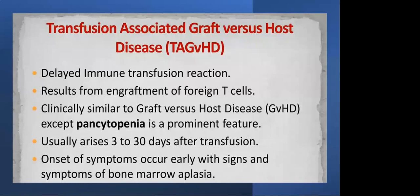The main goal of irradiation is to prevent transfusion-associated graft versus host disease (TA-GvHD). If non-irradiated blood is given, a delayed immune transfusion reaction can occur, caused by engraftment of foreign T-cells. It resembles graft versus host disease, with pancytopenia as a prominent feature, and usually arises 2 to 30 days after transfusion.